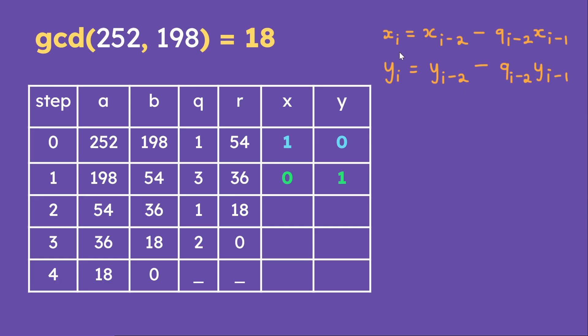So x of i is equal to x of i minus 2 minus q of i minus 2 times x of i minus 1. The second formula is very similar. So y of i is equal to y of i minus 2 minus q of i minus 2 times y of i minus 1. So it's the exact same thing up here, but it's just y instead of x.